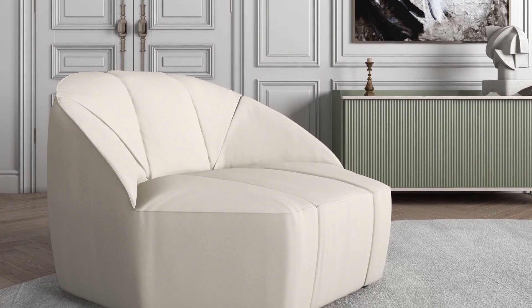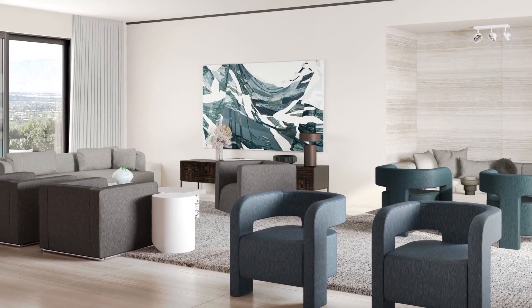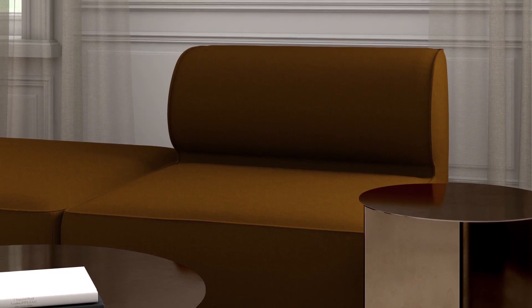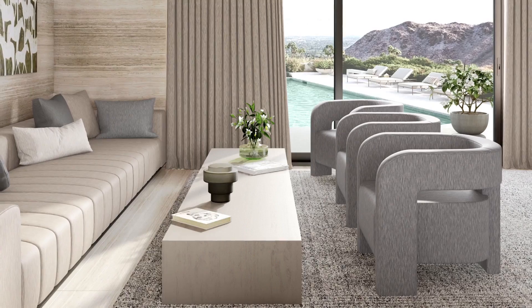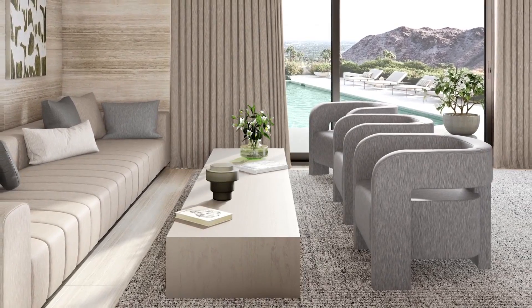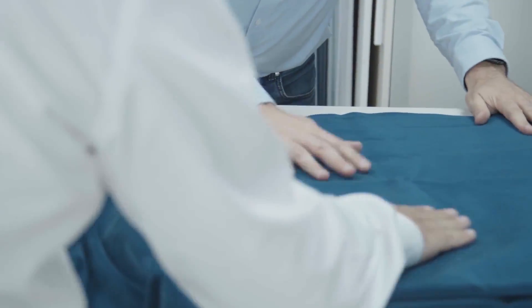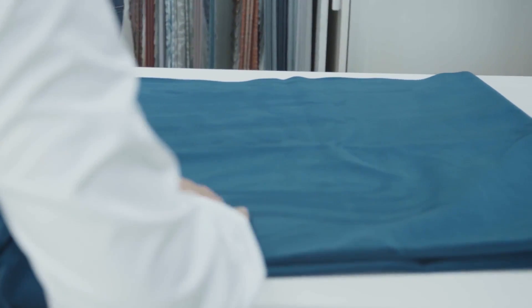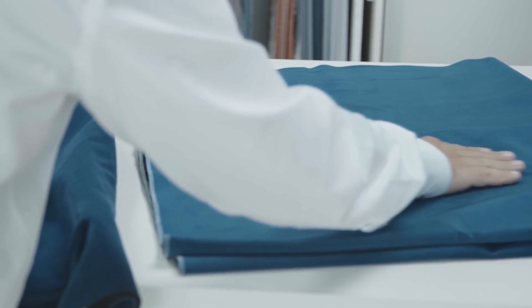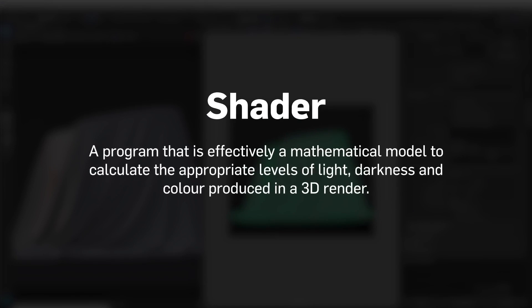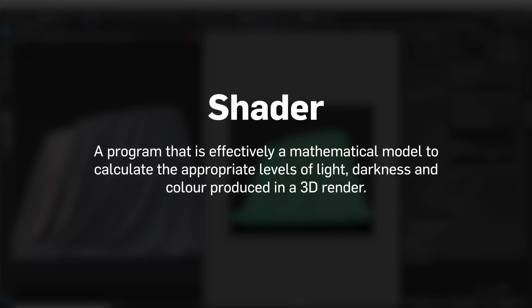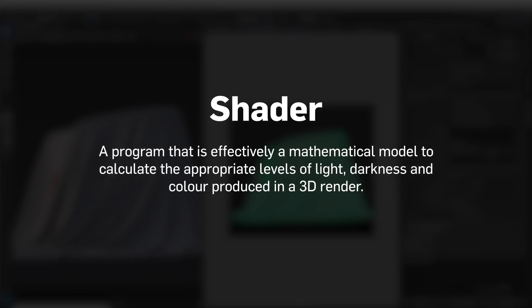When you scan velvet textiles, the multi-directional alignment of the pile of the fabric creates a sort of random effect of reflectivity of light. The problem is trying to simulate the randomness of the velvet fabric in a render. When you scan a velvet fabric and then try to tile it, the randomness effect is sort of lost — so the illusion of realism is lost. What we tried to do was create a velvet shader model which more accurately samples the light reflectivity of a velvet fabric and then models it in a rendering environment.